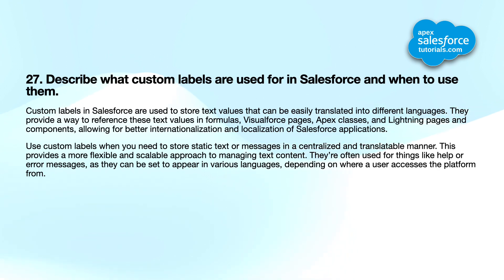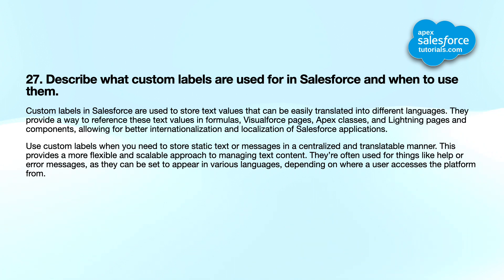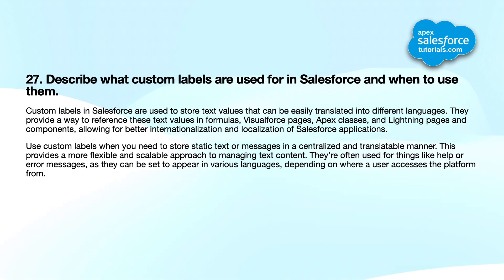Twenty-seventh question: describe what custom labels are used for in Salesforce and when to use them. Custom labels in Salesforce are used to store text values that can be easily translated into different languages. They provide a way to reference these text values in formulas, Visualforce pages, Apex classes, and Lightning pages and components, allowing for better internationalization and localization. Use custom labels when you need to store static text or messages in a centralized and translatable manner. They are often used for help or error messages that can appear in various languages depending on where a user accesses the platform from.